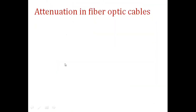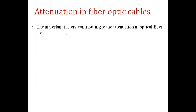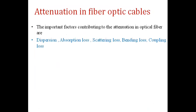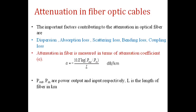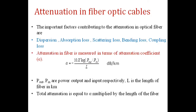Attenuation is the optical loss suffered during propagation along the length of the optical fiber. Factors contributing to attenuation include dispersion, absorption loss, scattering loss, bending loss, and coupling loss. Attenuation is measured in terms of the attenuation coefficient, denoted by alpha (α). The formula is: α = −10 × log(P_out / P_in) / L, measured in decibels per kilometer, where P_out and P_in are the output and input power respectively, and L is the length of the fiber in kilometers. Total attenuation equals α multiplied by the length of the fiber.